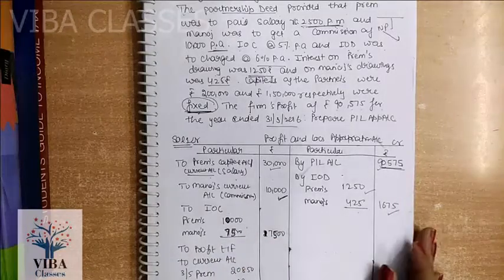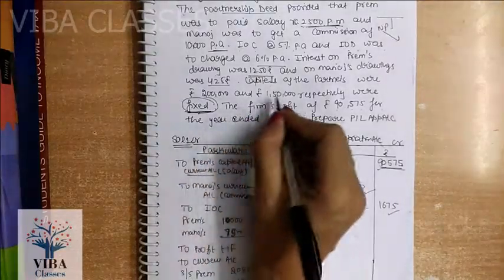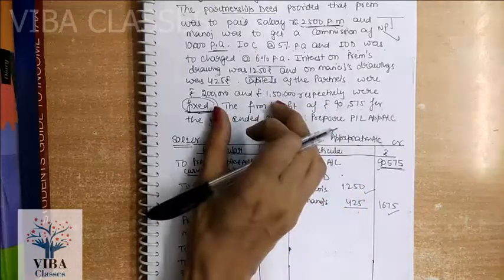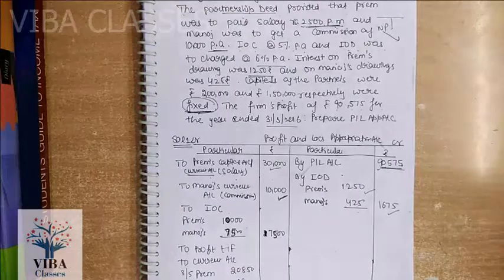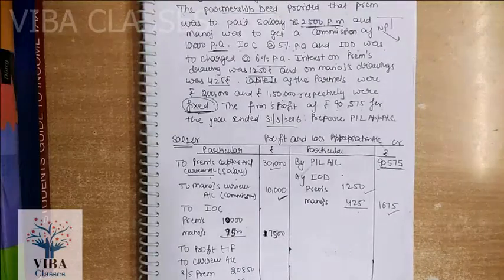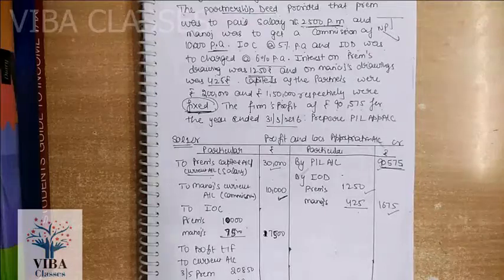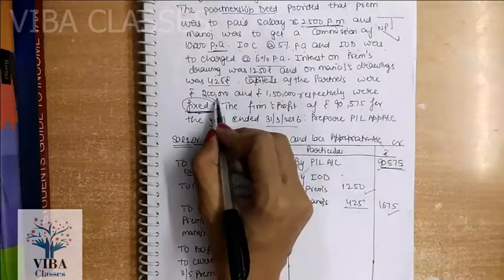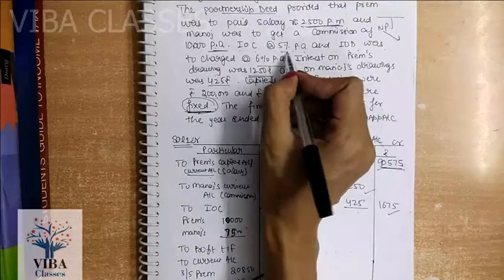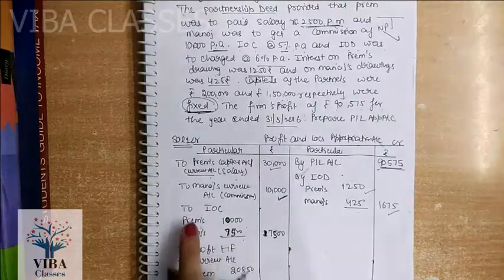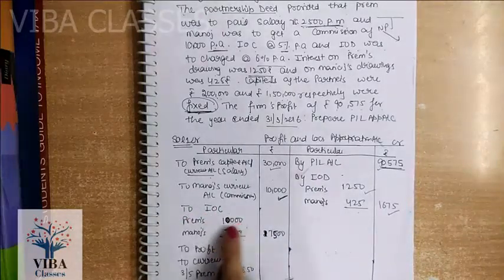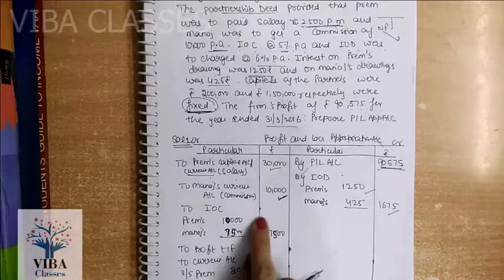Interest on capital is charged to partners. Capital given is Rs. 2,00,000 and Rs. 1,50,000. The good thing is that this is fixed capital, so you don't need any adjustment. Interest on capital is always calculated on opening capital. In fixed capital, there are no changes in capital, so no problem. Rs. 2,00,000 at 5% = Rs. 10,000, and Rs. 1,50,000 at 5% = Rs. 7,500. Total interest on capital is Rs. 17,500, credited to Prem's and Manoj's current accounts.